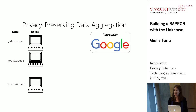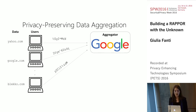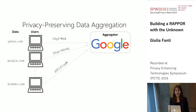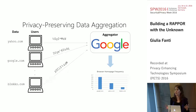The idea is that each user will add some statistical noise to their data in such a way that the noise masks the underlying data. They'll generate some randomness and then send these randomized reports to the aggregator. The aggregator will then apply some post-processing to these reports and extract the desired information — in this case, a distribution over the underlying strings.